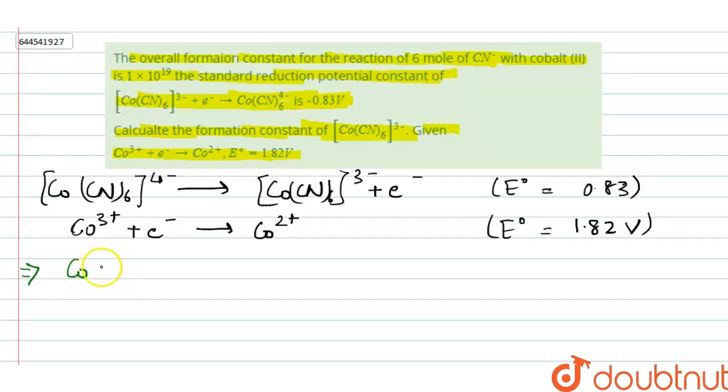It will be [Co(CN)6]4- plus Co3+ that will eventually lead to Co2+ plus [Co(CN)6]3-.